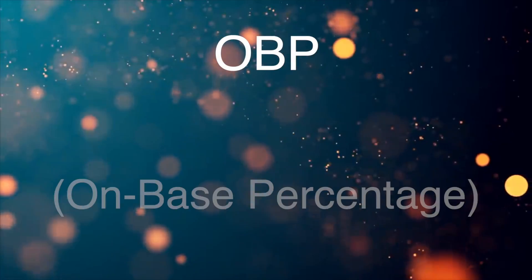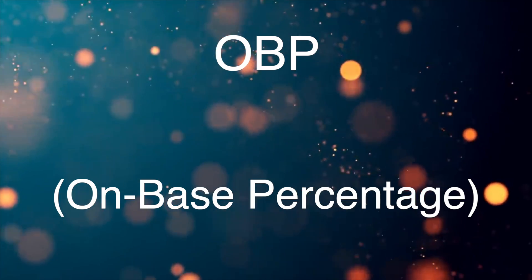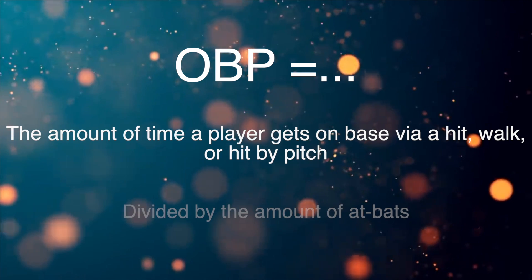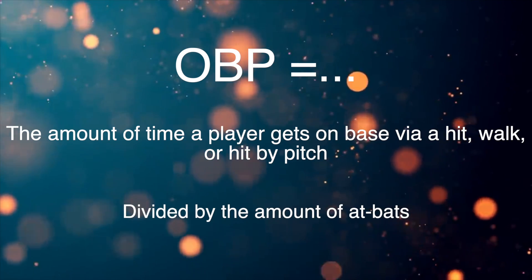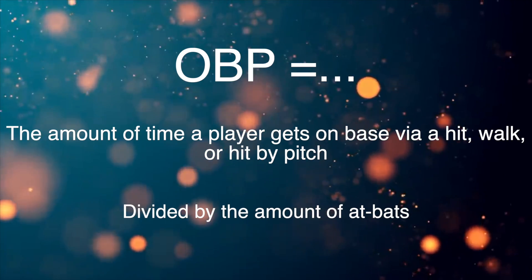We're going to start with OBP, or on-base percentage. What is on-base percentage? On-base percentage is the amount of times a player gets on base by any means necessary besides an error or something the batter can't control. A batter can control how much they hit the ball into play, how often they walk, and how often they get hit by a pitch — and OBP measures hit by pitch as well, because technically you get on base by getting hit by a pitch.